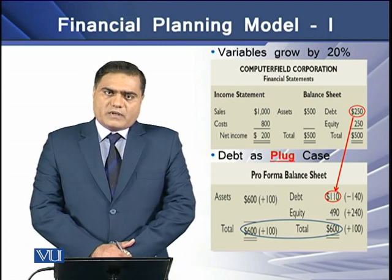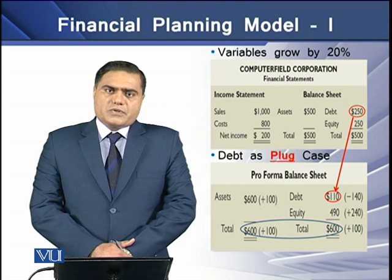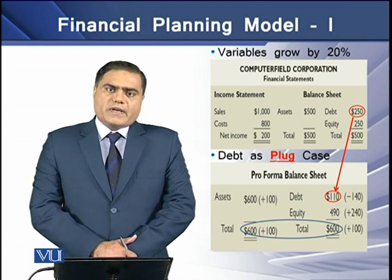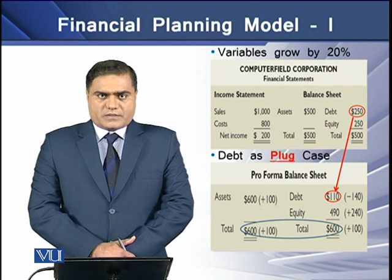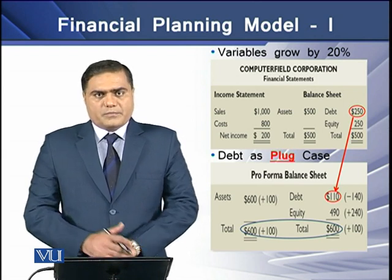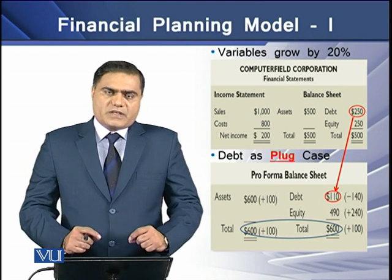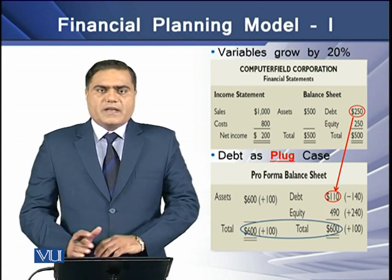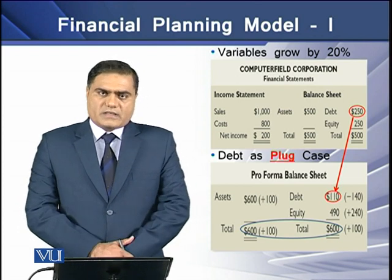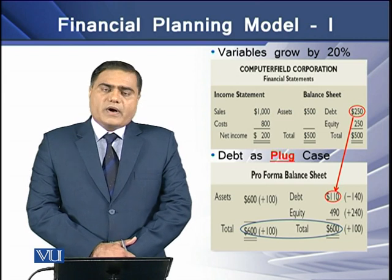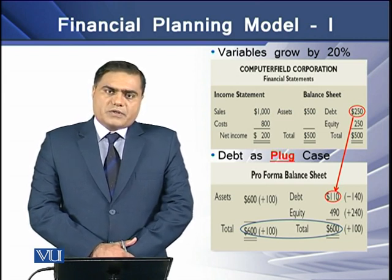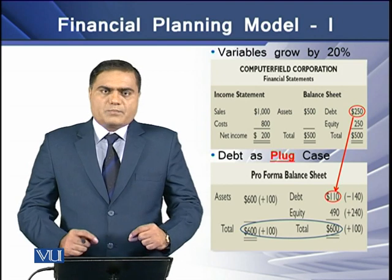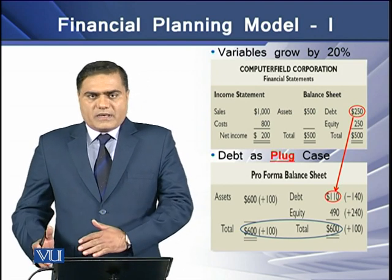But we have another option. If we don't want to pay cash dividend, but rather want to retain it for future expansion, then equity would report at $490. The solution is that we pay a certain amount of debt in order to keep liabilities in agreement with the assets side. So $140 would be paid out of debt, keeping debt at $110. In this way, we have used debt as the plug in order to equalize the liabilities side with the balance sheet.